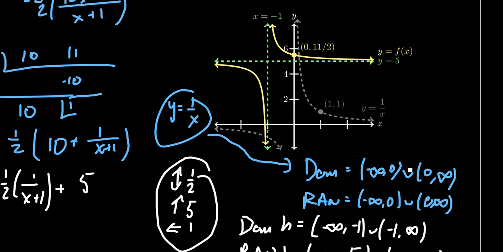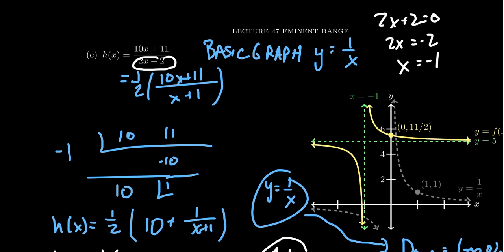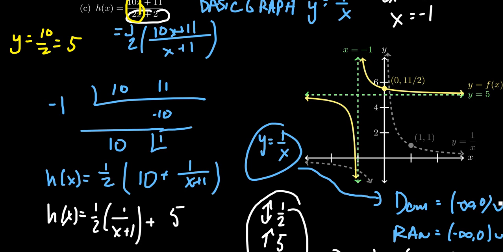For linear fractionals, we can use transformations, but in a nutshell it's always this simple: the domain is everything except the location of the vertical asymptote, and the range is all real numbers except the location of the horizontal asymptote. The horizontal asymptote is found by looking at the ratio of leading terms — 10 over 2 equals 5. For linear fractionals, we can find their domain and range using much simpler terms.